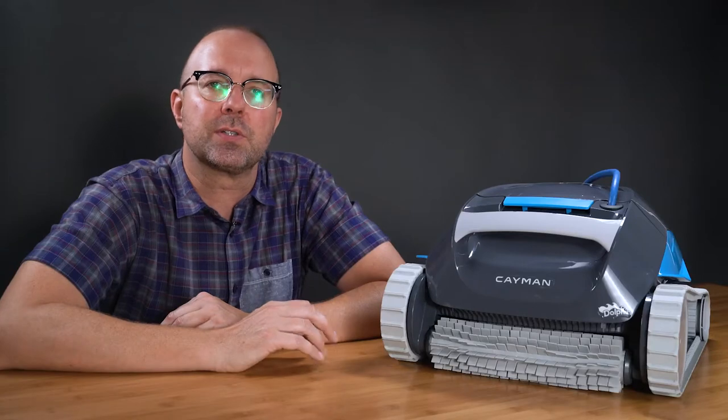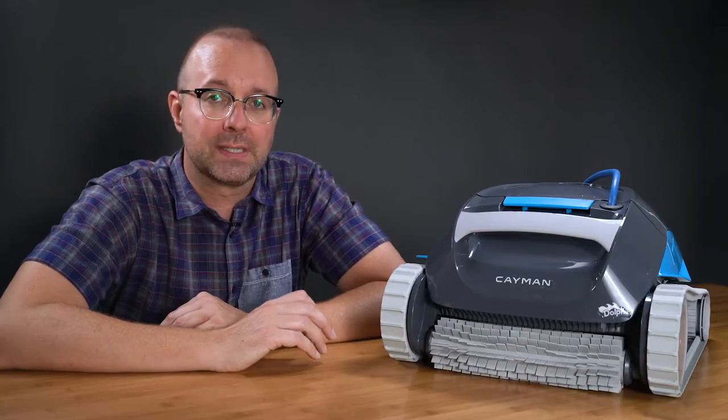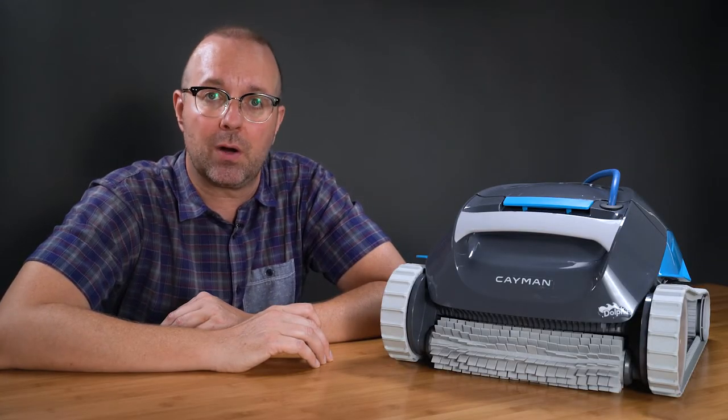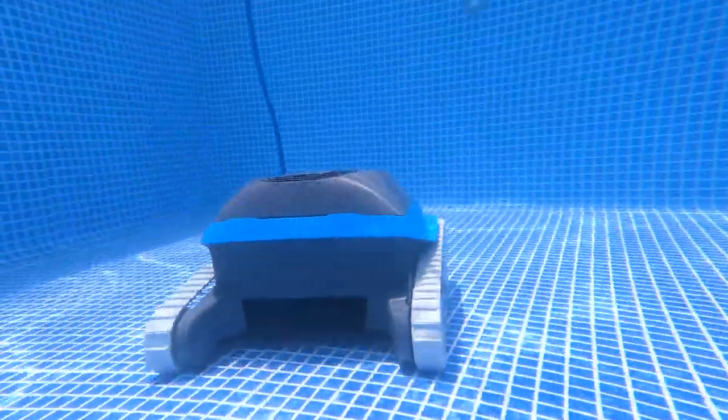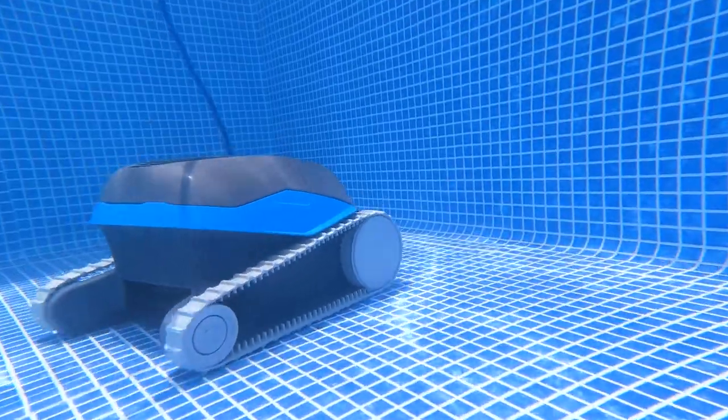So it can easily traverse and scrub your pool as well as collect debris in the large basket. But can it do it efficiently? Once again, the Cayman really punches above its weight with SmartNav 2.0, which actively scans your pool to create a cleaning route so that your robot doesn't spend time going over and over the same spots again and again.